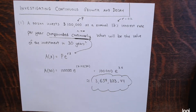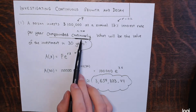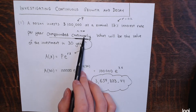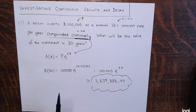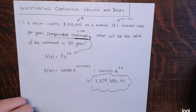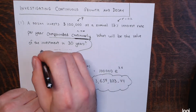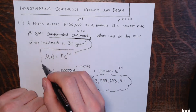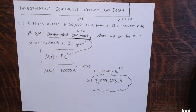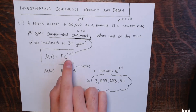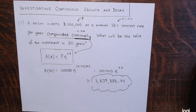The key word is continuously. It didn't say weekly or monthly or daily — it said compounded continuously. So when you see that word, you automatically jump to this model: the amount after T years is the initial amount P times E to the RT power.